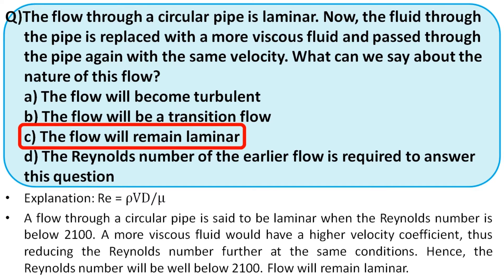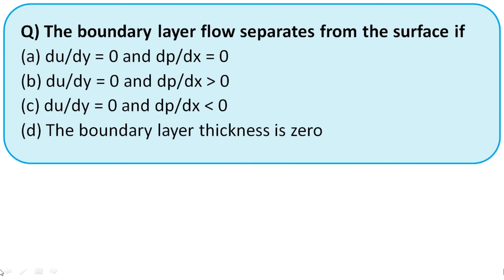Next question: boundary layer flow separates from the surface if — options: (A) ∂u/∂y = 0 and dp/dx = 0; (B) du/dy = 0 and dp/dx > 0; (C) du/dy = 0 and dp/dx > 0; (D) boundary layer thickness is 0.